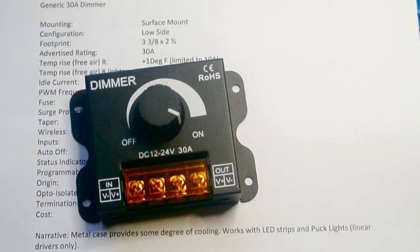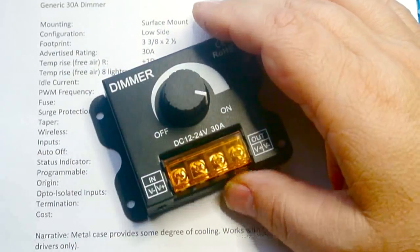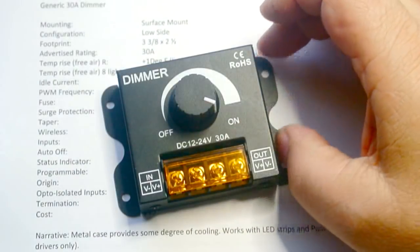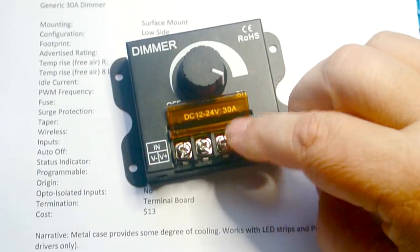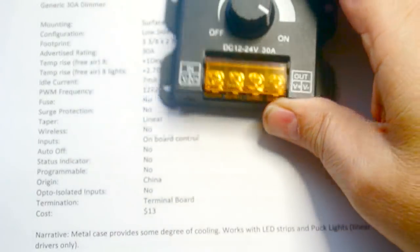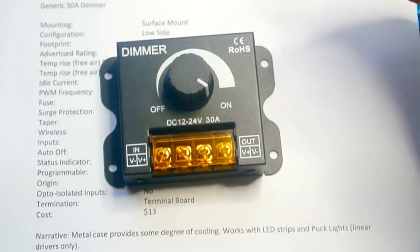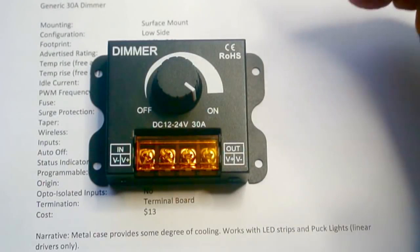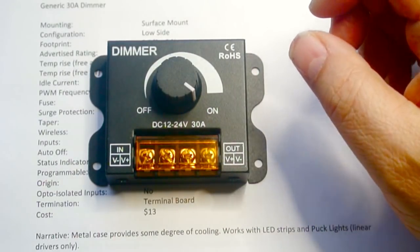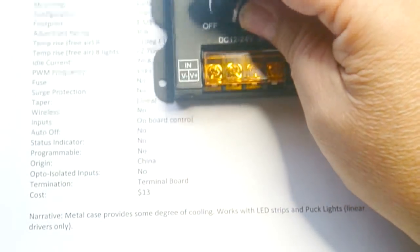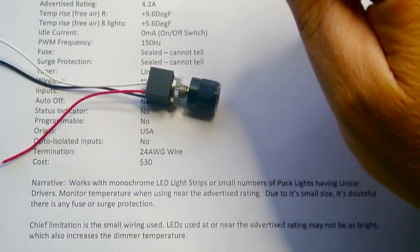Next is this generic 30 amp dimmer. Very similar to the one we just saw, although this is a metal box. So it can dissipate heat a little bit better. It's a low side dimmer. Still has a surface mount, and it's made in China. Termination on this, though, are a little bit better terminal board. And cost is around $13. And the chief disadvantage I see with this is that the PWM frequency is 12 kHz, which means it's going to have a tougher time with some fixtures. Especially if you decide to use switch mode fixtures, this may not dim very well. And even in the off position, it will still have about 7 milliamperes of current flow in the idle condition.